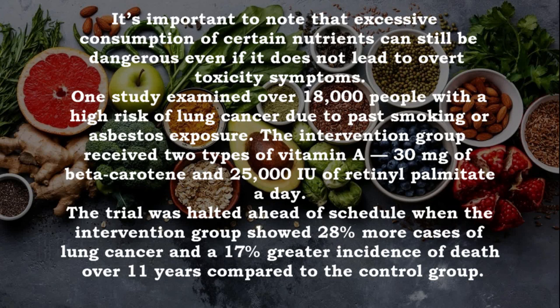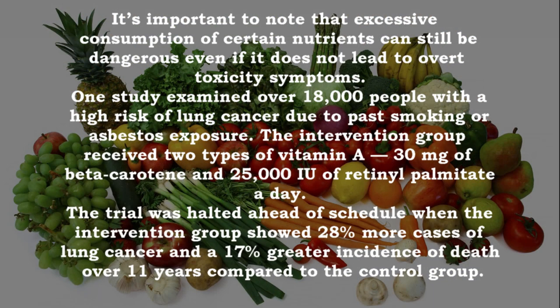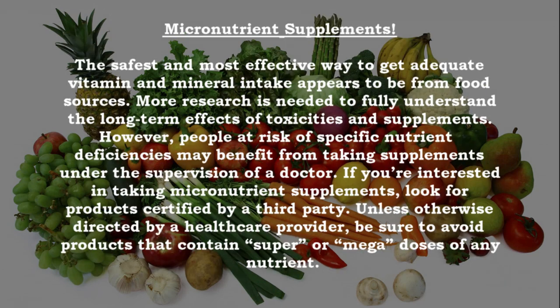It's important to note that excessive consumption of certain nutrients can still be dangerous even if it does not lead to overt toxicity symptoms. One study examined over 18,000 people with a higher risk of lung cancer due to past smoking or asbestos exposure. The intervention group received two types of vitamin A: 30 milligrams of beta-carotene and 25,000 IU of retinol palmitate daily. The trial was halted ahead of schedule when the intervention group showed 28% more cases of lung cancer and a 17% greater incidence of death over 11 years compared to the control group.